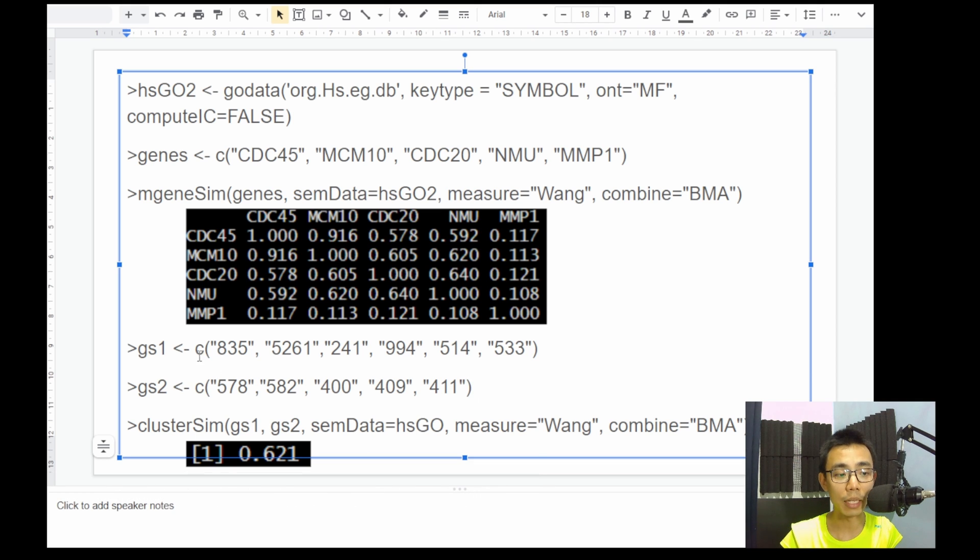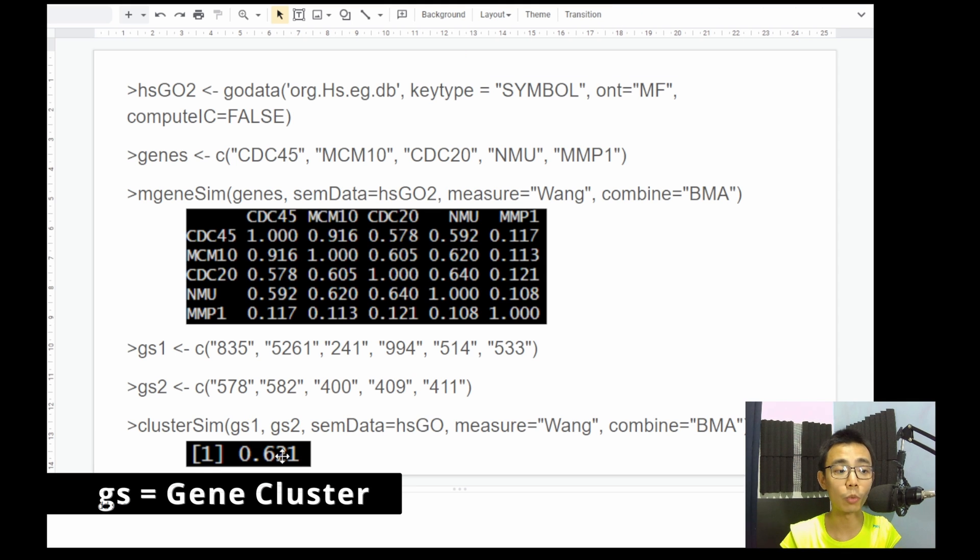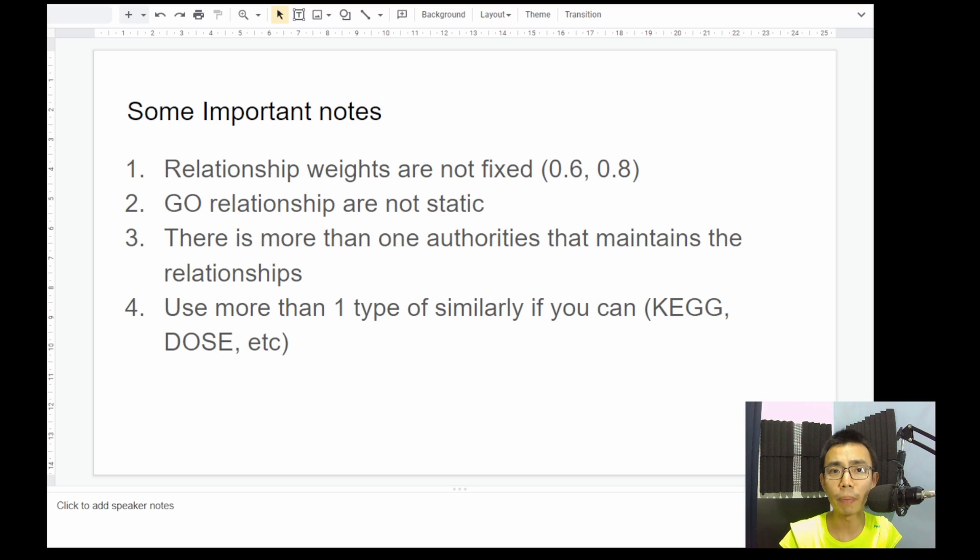and then the two different clusters, it will actually try to generate a similarity score for you, which is in this case, GS1 and GS2 is 0.621. So you don't have to calculate the matrix yourself, it actually does the summary and averages for you directly as 0.621. So that's basically the whole concept of the Wang method in the calculations of semantic similarity in GO, but there are some important notes that I want to make sure.